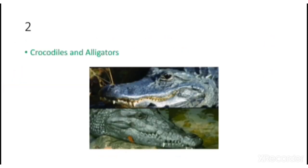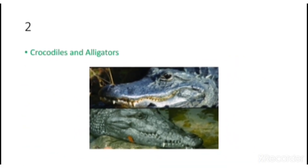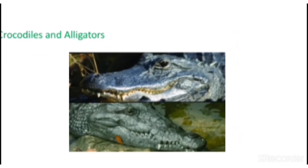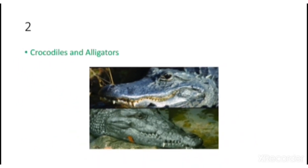Number 2: Crocodiles and Alligators. As you can see in this picture, there is a crocodile and an alligator. They are reptiles — not amphibians — but they do share some characteristics of amphibians in that they live in both water and land. They look very similar to each other, making it very hard to identify them.